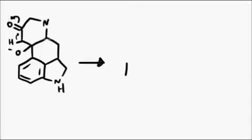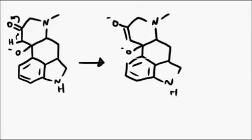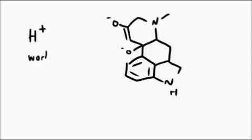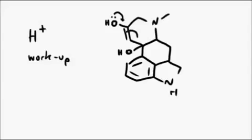Then in the workup, acidic conditions are present. Both the oxygens can be protonated, and the whole thing collapses in a net E1CB reaction to form an enone system.